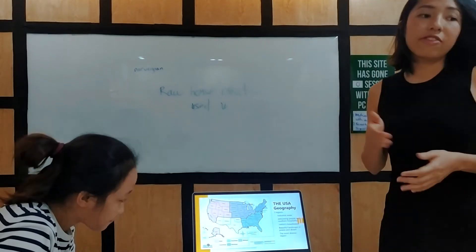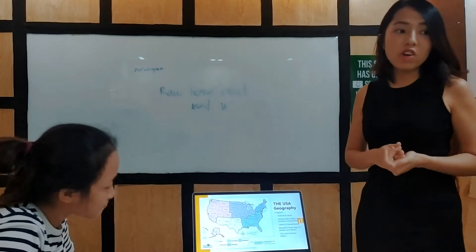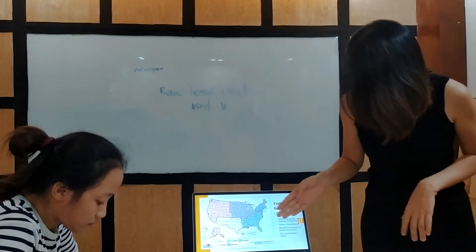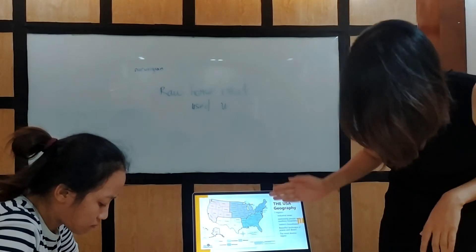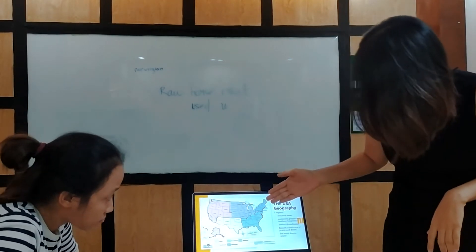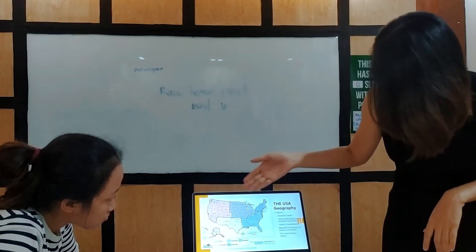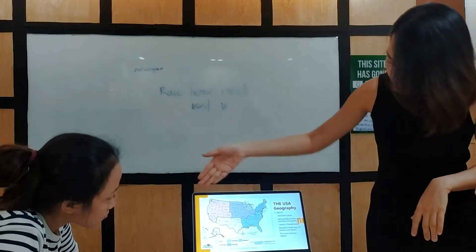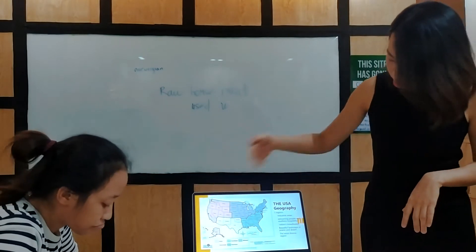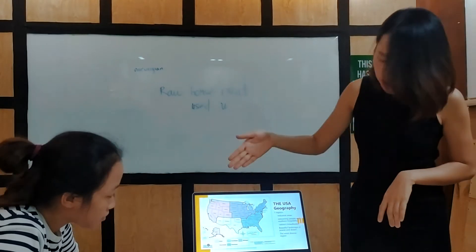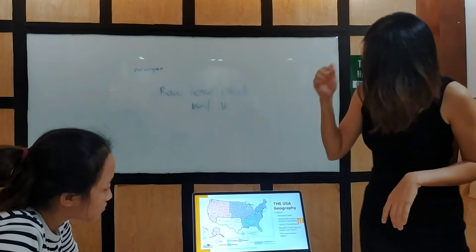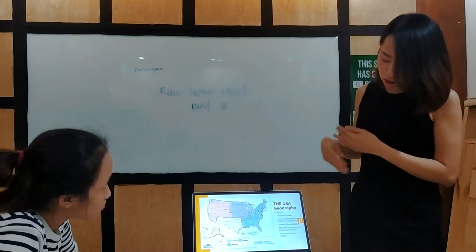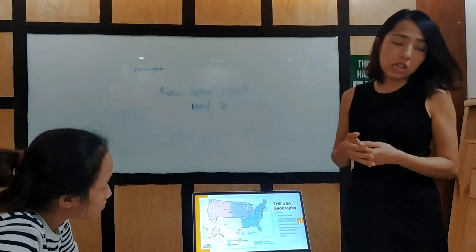The country is divided into five regions: the Northeast, the Southeast, the Southwest, and the West. You can see on the map. I will go into detail on the regions.